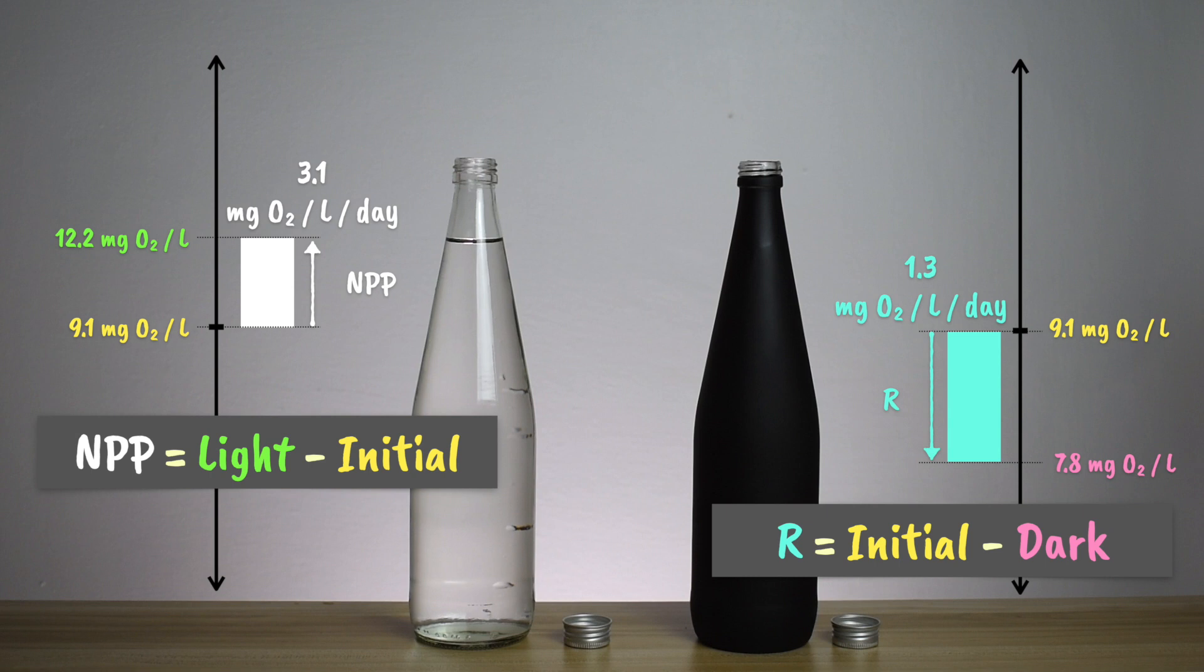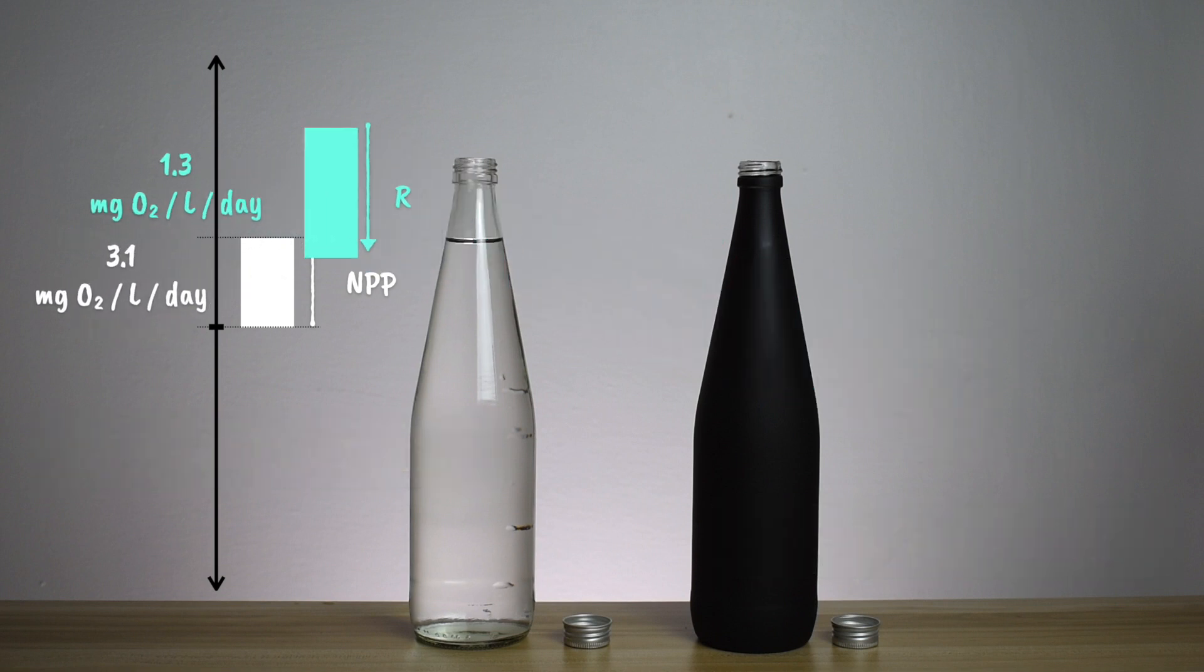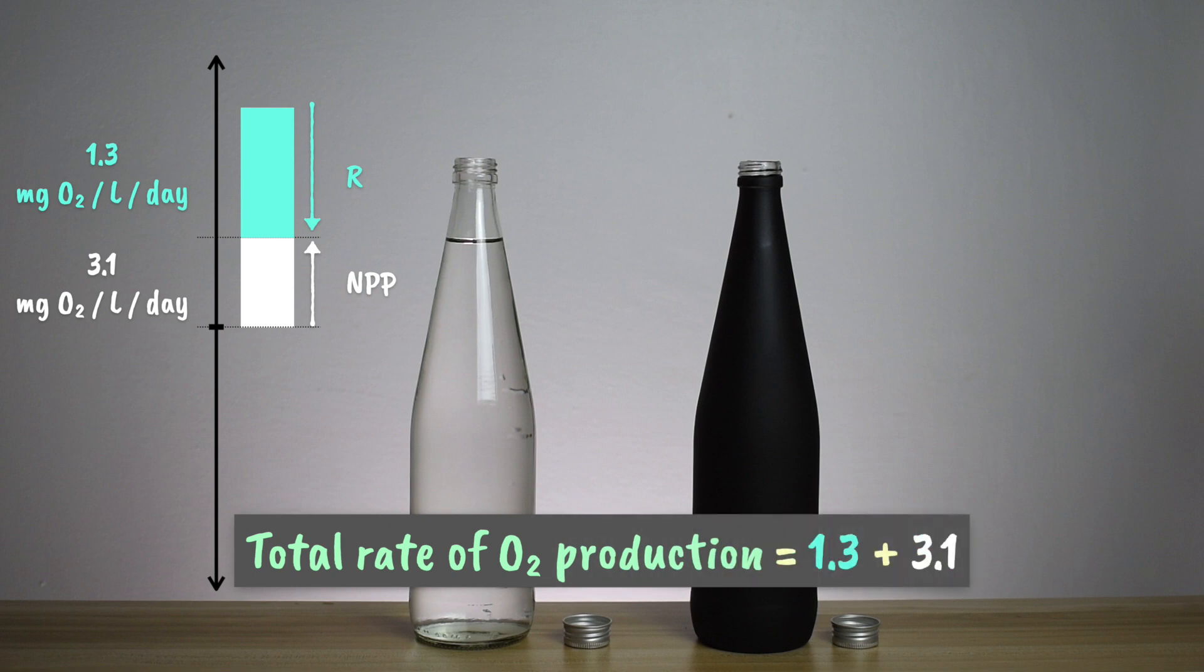So, we know that an amount of oxygen was produced in the light bottle by photosynthesis, and we know that some of that oxygen was used in respiration. We also know from the dark bottle that that amount used for respiration was 1.3. So, we can infer that the total rate of oxygen production was 1.3 plus 3.1, which is 4.4 milligrams of oxygen per litre, per 24 hours.